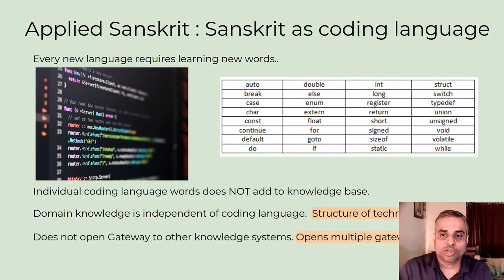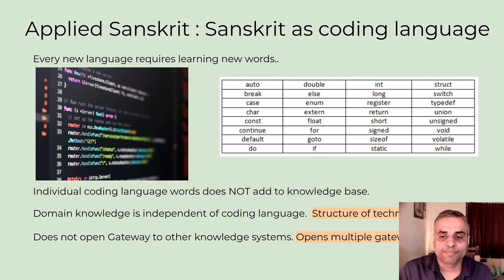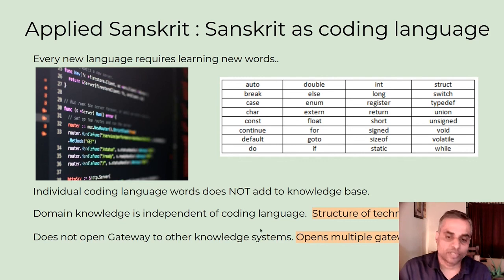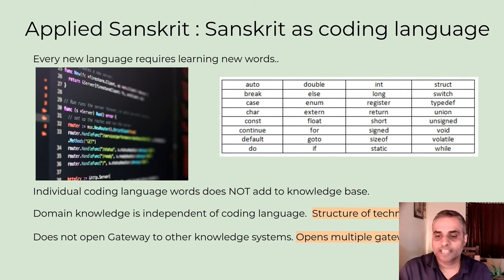Normal coding, when we learn it, doesn't open gateways to other knowledge systems beyond computer science. Whereas in Sanskrit coding, it opens multiple gateways. We will try to understand why that is so.